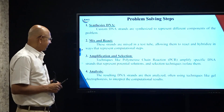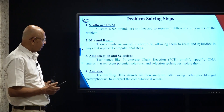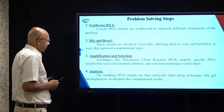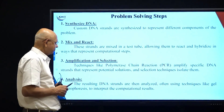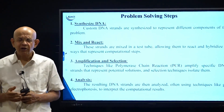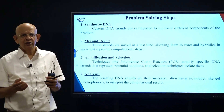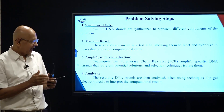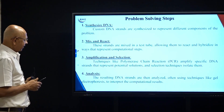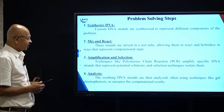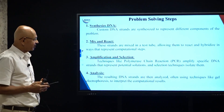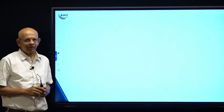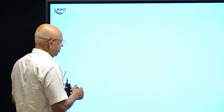These custom DNA strands are mixed in a test tube, allowing them to react and hybridize. The steps of moving from one state to another represent computational steps. There is something called the polymerase chain reaction which amplifies certain DNA molecules only — out of all the DNA molecules in a test tube, we can choose to amplify the one we want. The resulting DNA strands can then be analyzed and a selection process applied to extract the computational results.